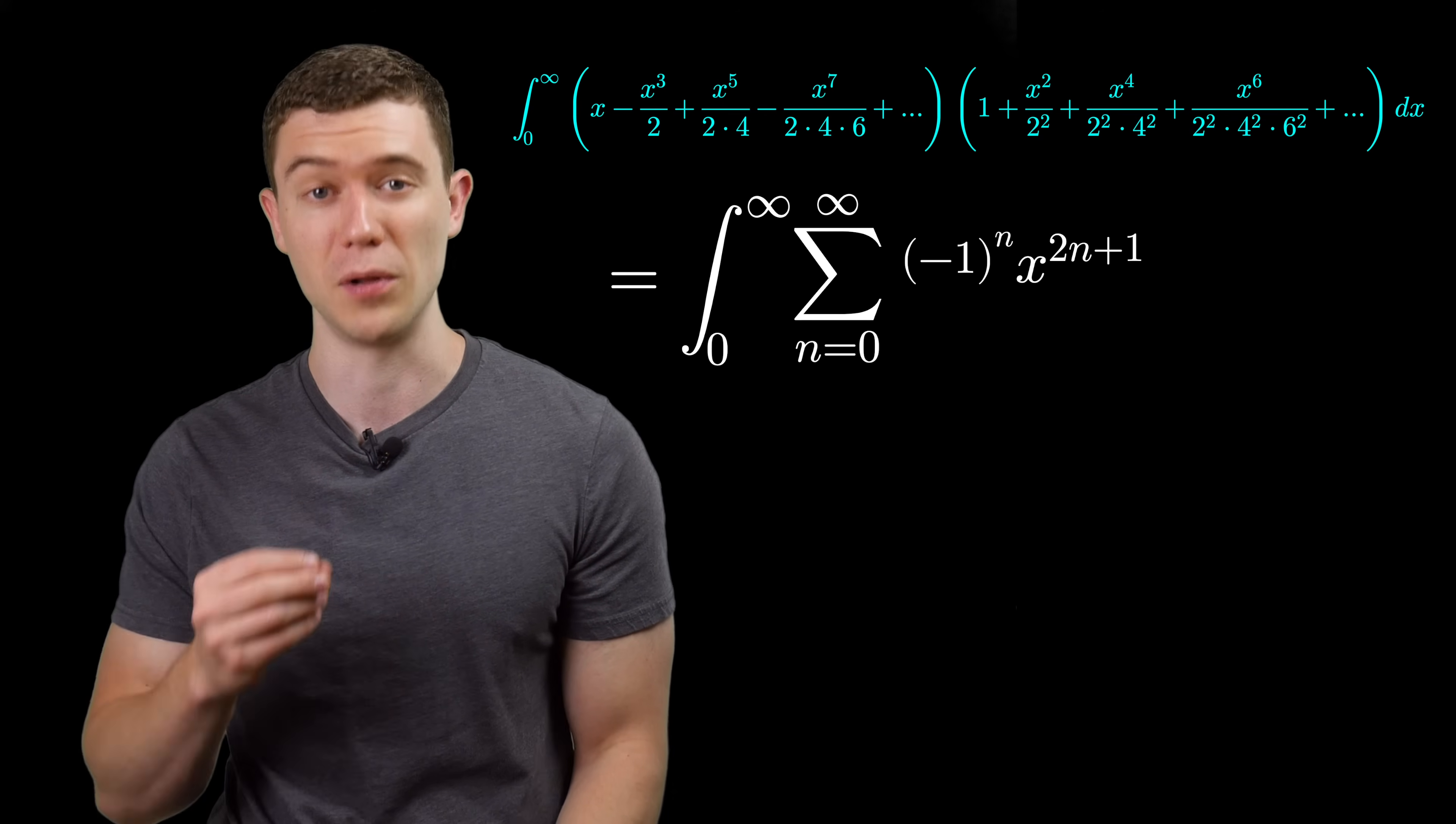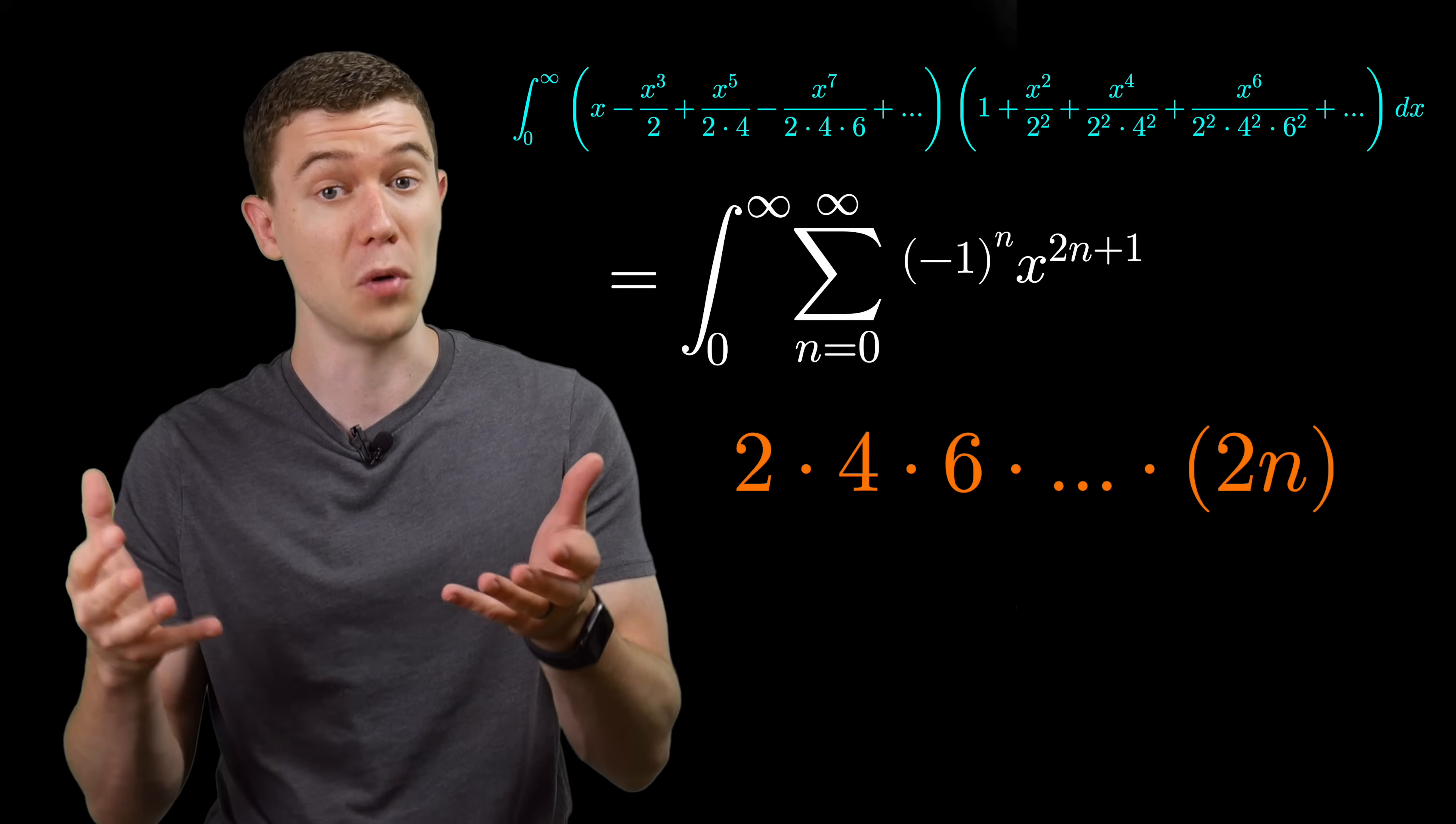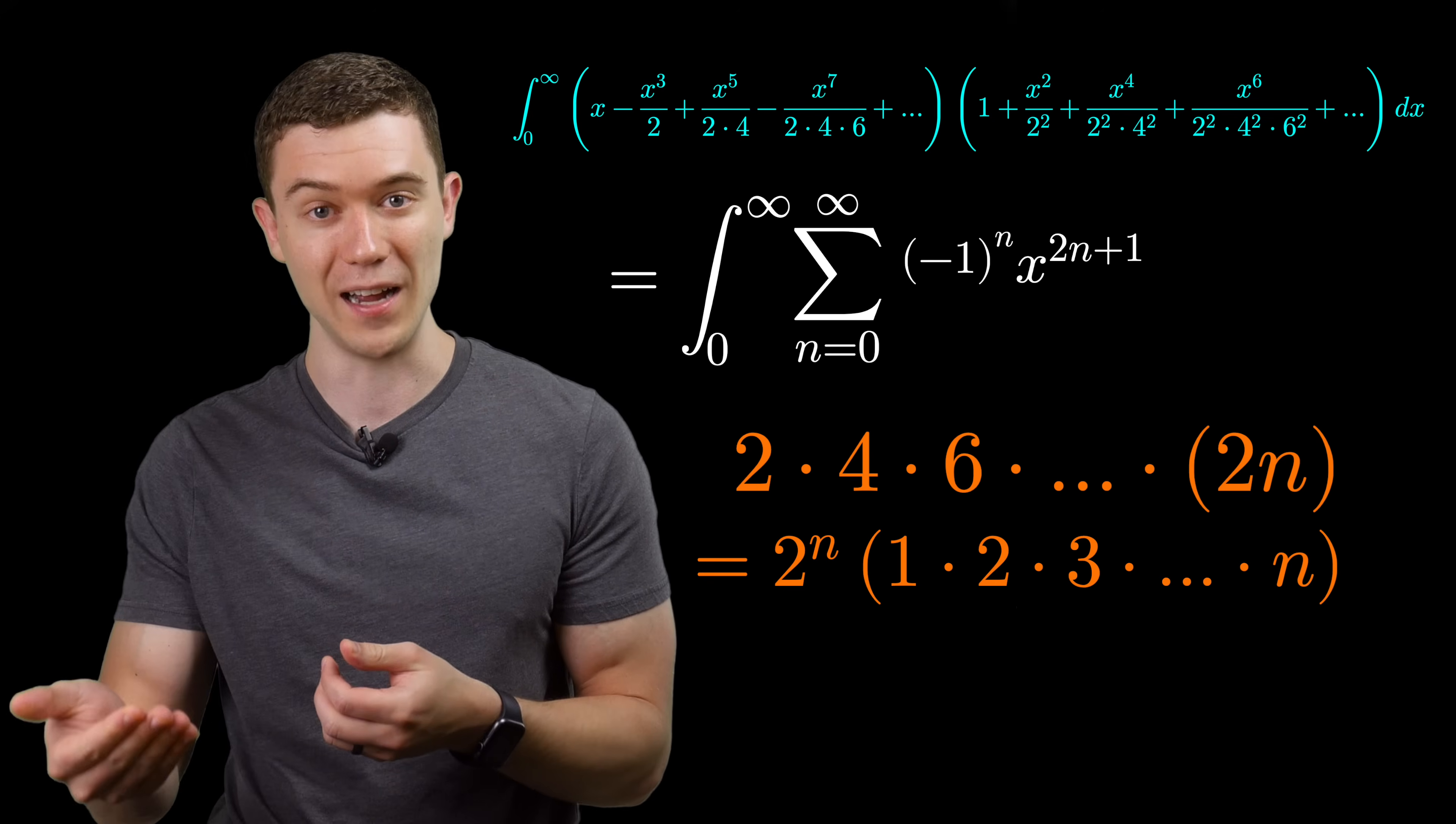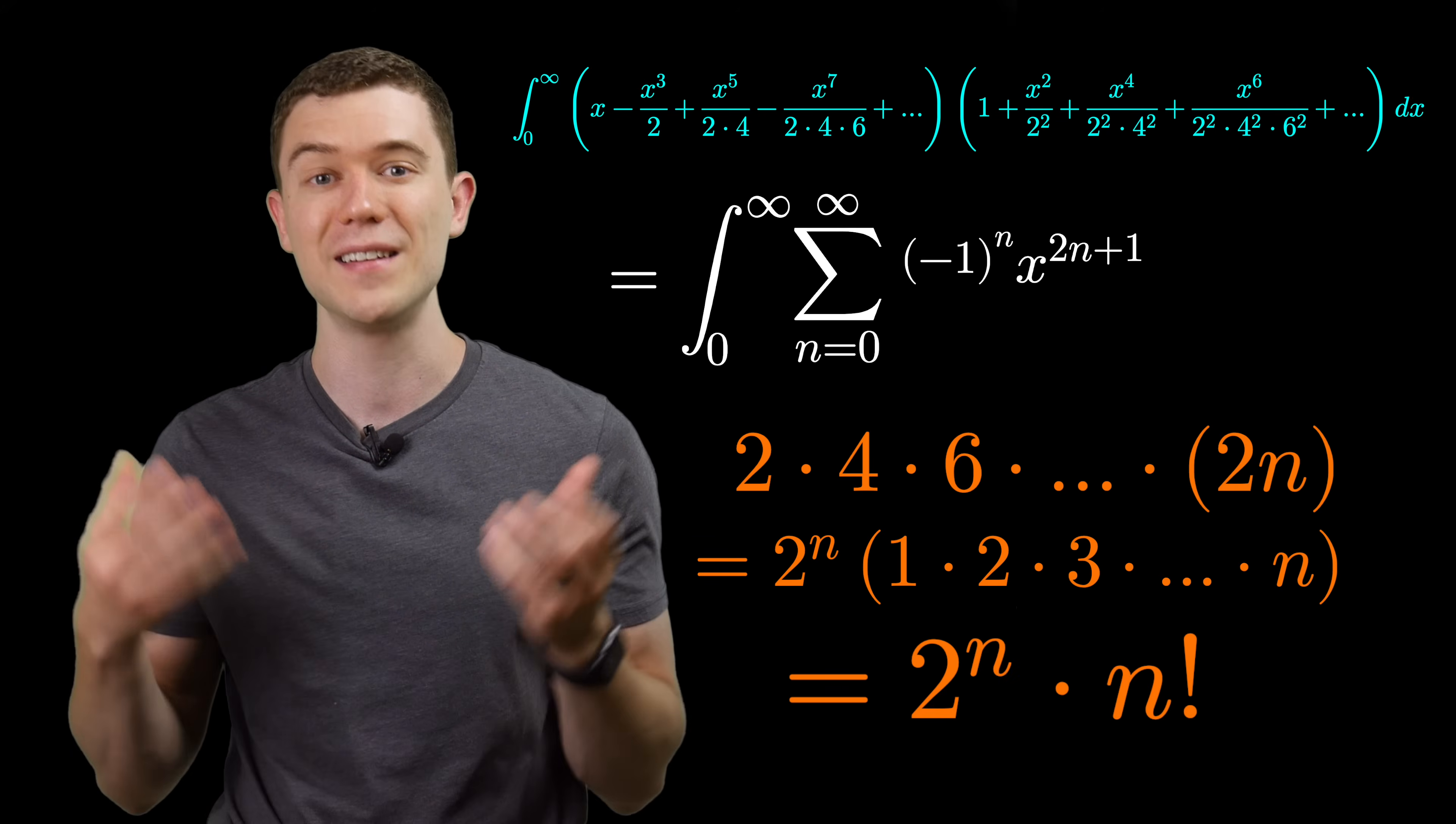So we'll have an x to the 2n plus 1. The pattern in the denominator of this first sum is what's tricky. Basically, that pattern goes like 2, 4, 6, 8, all the way up to 2n, the product of this. And the trick here is to factor out a 2 from every single term. We would have to pull a 2 out n times. So we have 2^n times 1 times 2 times 3 times 4 all the way up to n. That's n factorial. Thus, the denominator in this sum should be 2^n times n factorial.